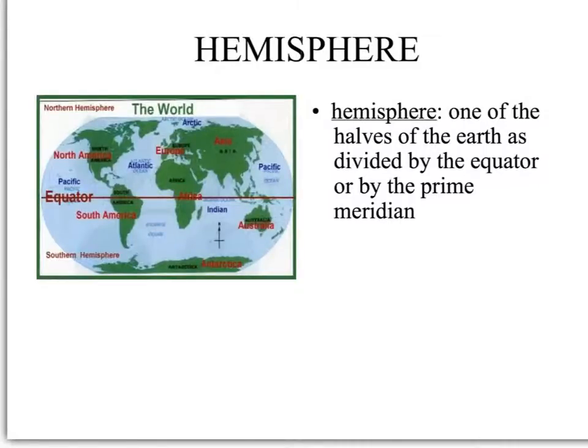Finally, our last vocabulary word is hemisphere. Hemisphere is one half of the earth as divided by the equator or prime meridian. When we talk about hemispheres with earth space science, we generally talk about the north and south hemisphere because that's the hemispheres split by the equator that affect our seasons.